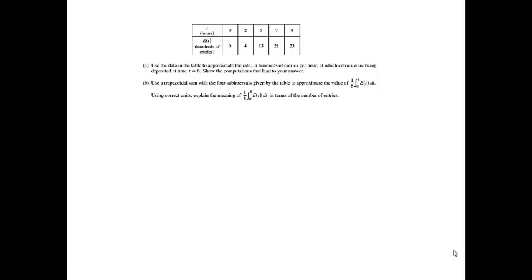A zoo sponsored a one-day contest to name a new baby elephant. Zoo visitors deposited entries in a special box between noon, t equals 0, and 8 p.m., t equals 8. The number of entries in the box, t hours after noon, is modeled by a differentiable function e for 0 to 8. Values of e in hundreds of entries at various times t are shown in the table above.